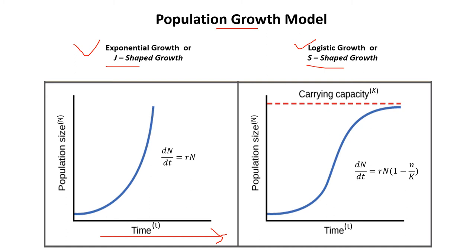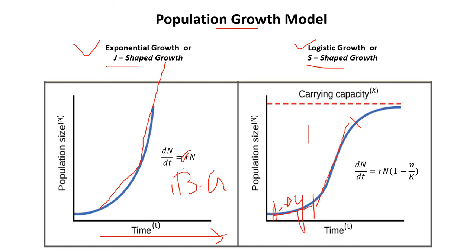In the exponential growth curve, as time increases, the population keeps increasing. The equation is dN/dt = r × N, where r is the biological growth rate and N is the number of individuals. In the logistic growth curve, at the beginning the population increases very slowly — that is the lag phase. Then it increases rapidly — the log phase. After that, the population stabilizes.